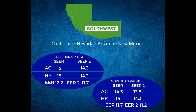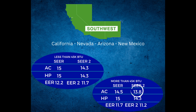Starting with air conditioning systems that are under 45,000 BTU, here are the numbers you need to know. For SEER 2, we're looking at 14.3 SEER 2. The SEER equivalent would be 15 SEER. And the EER number you're looking for is either 12.2 EER or, with the new EER 2, we're looking at 11.7. Moving on, if your equipment is greater than or equal to 45,000 BTUs, you're in a different category — 13.8 SEER 2 or 14.5 SEER, and for EER, we're looking at 11.2 EER 2 or 11.7 EER.